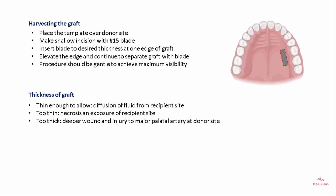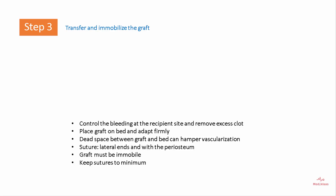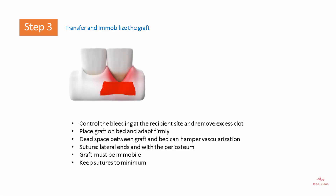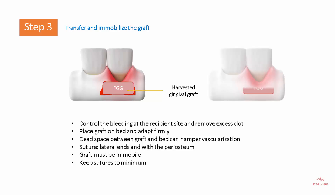The thickness of the graft is very important. It should be thin enough to allow diffusion of fluid from the recipient site, but not too thin as that can cause necrosis and exposure of the recipient site. If it is too thick, deep wound injury to the major palatal artery is possible. Step three involves transfer and immobilization of the graft, achieved by controlling bleeding at the recipient site and removing excessive clot. The graft is placed on the bed and firmly adapted; any dead space is removed as it can hamper vascularization. Suturing is done at the lateral ends and with the periosteum, and sutures must be kept to a minimum.